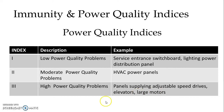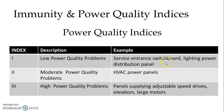Similarly, we have power quality indexes — again with index one, two, and three. Index one represents low power quality problems, with examples such as service entrance, switchboard, and lighting power distribution panels.